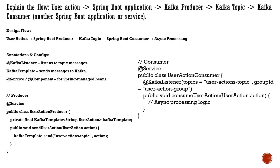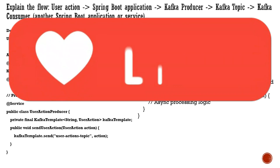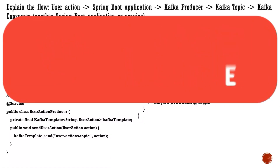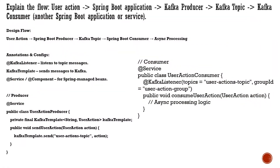With respect to architecture, when the user takes some action there will be a producer and a consumer. Kafka is essentially about a producer and a consumer — somebody produces the data and somebody consumes it. This data is stored in topics, which are under partitions on the Kafka server. The producer subscribes to topics and the consumer also subscribes to the same topics.